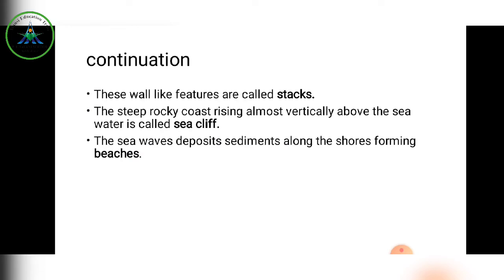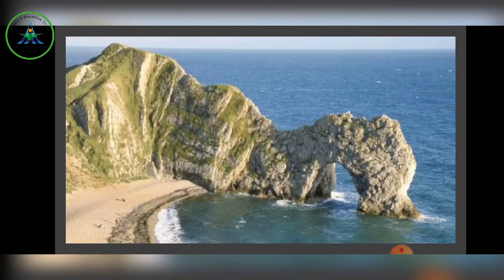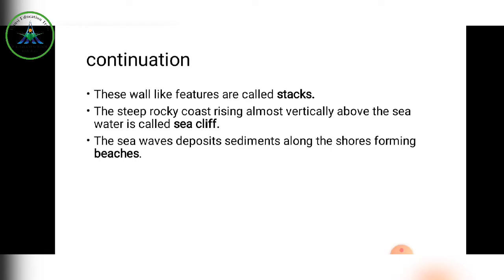The steep rocky coast rising almost vertically above the sea water is called a sea cliff. The sea waves also deposit sediments along the shores, forming beaches. The vertical portion remaining is the sea cliff, and the final stage of erosion produces a stump.